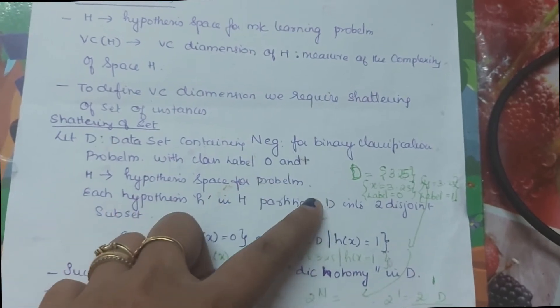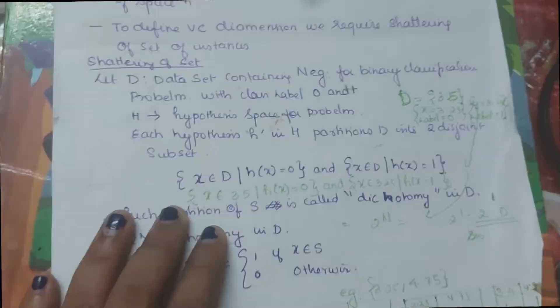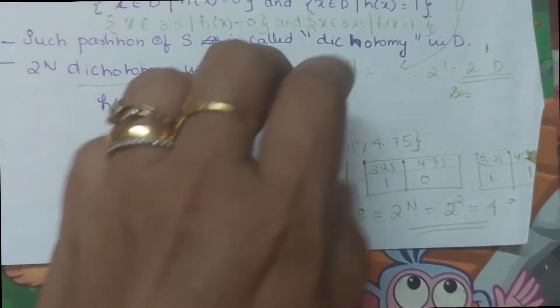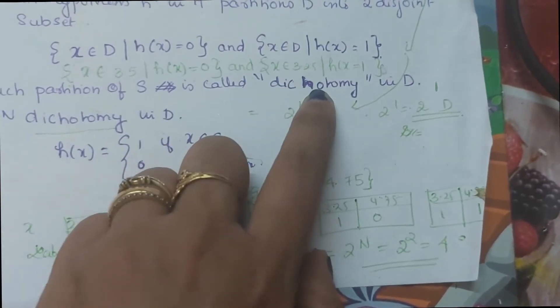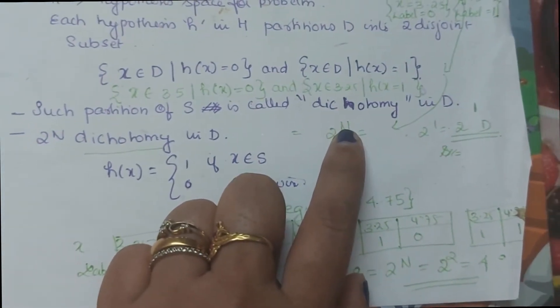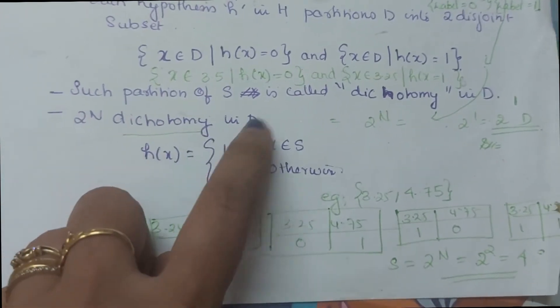Because I have no class label here, 0 or 1. So we call it disjoint set. Such partition of S is called Dichotomy in D. Dichotomy means this partition of S.